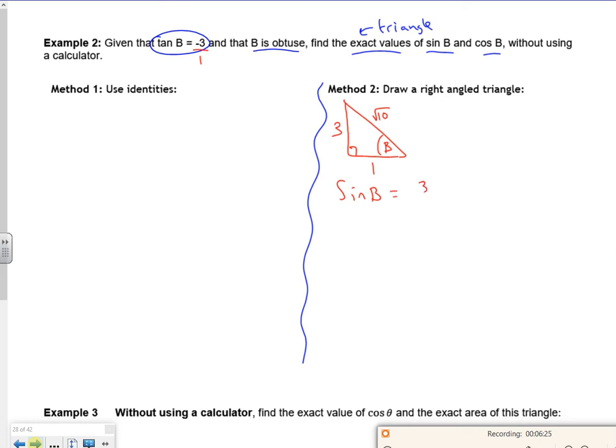From there, sine B will be opposite 3 over hypotenuse root 10. I know that for the obtuse, sine is positive. For cos B, it's adjacent over hypotenuse, but I know from the graphs that the y value of cos is negative for an obtuse, so I'll put that there. To me, dead easy.